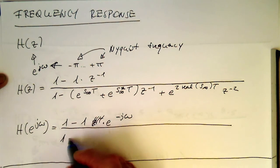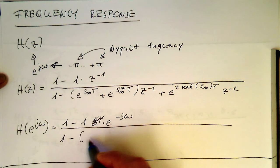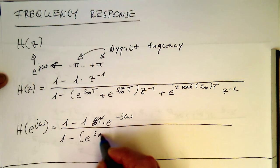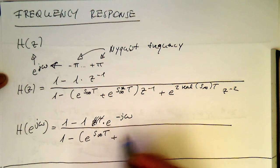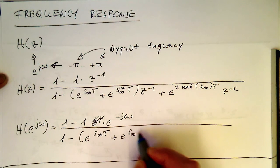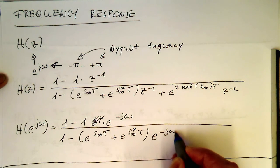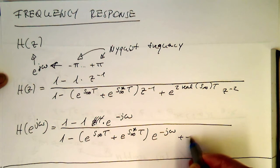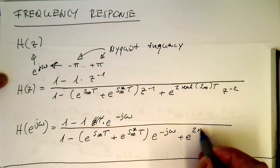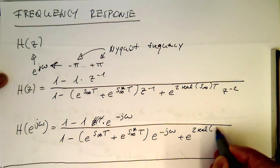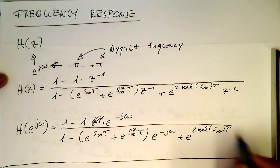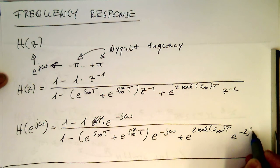And then we have 1 minus and then e to S infinity T and then e to S infinity star T and then we've got here e to minus j omega plus and then e to 2 real of S infinity T and then we've got here e to minus 2 j omega.